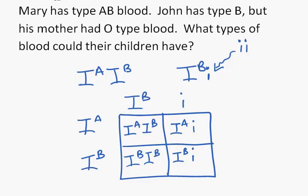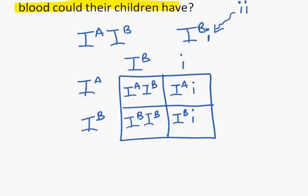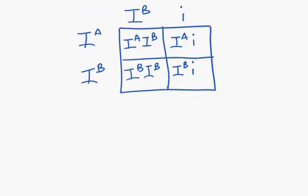Looking at the question, it says what type of blood could their children have? These are genotypes, so we need to convert this to blood types. We have a type AB. We have two type B.